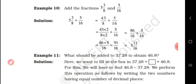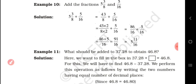Add the fractions 5 and 3/8 plus 5/16. First, convert the mixed fraction to an improper fraction: 8 times 5 plus 3 equals 43, so we have 43/8 plus 5/16. Since the denominators are different, we take the LCM. 43/8 becomes 86/16. Then 86/16 plus 5/16 gives 91/16. Converting back to a mixed fraction: 5 and 11/16.